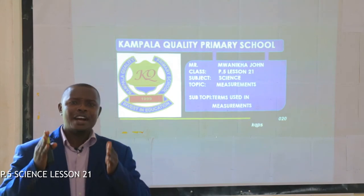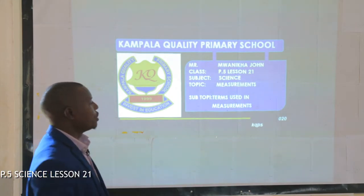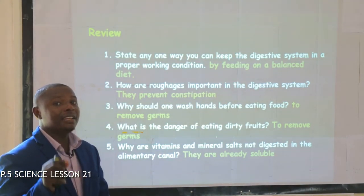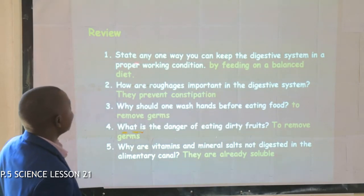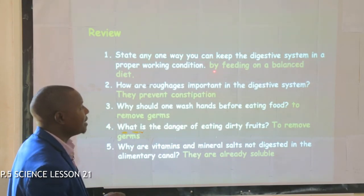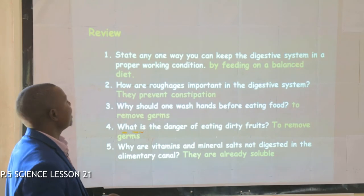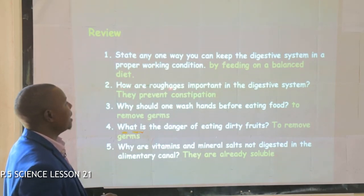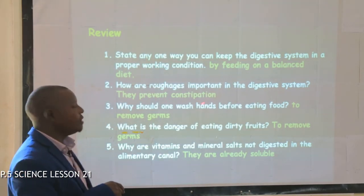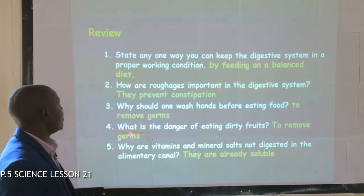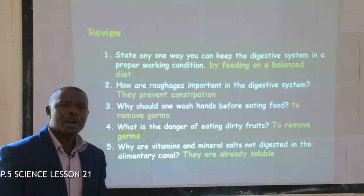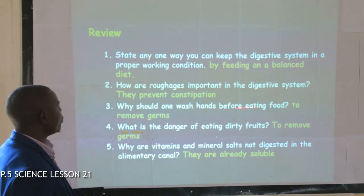Before we go any further, I want to ask you — together we move to our exercise that we did last time and we see where we failed. One: state any one way you can keep the digestive system in a proper working condition. And that is by feeding on a balanced diet. Two: how are roughages important in the digestive system? Roughages prevent constipation. Why should one wash hands before eating food? To remove germs.